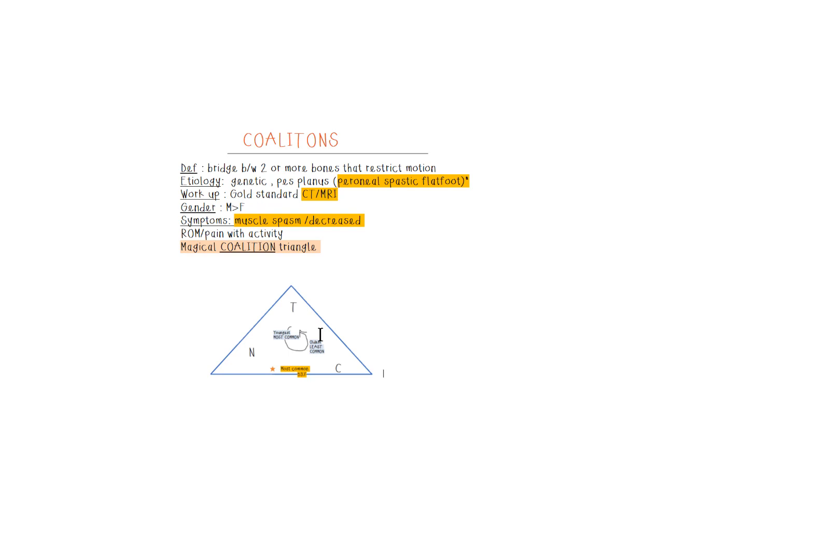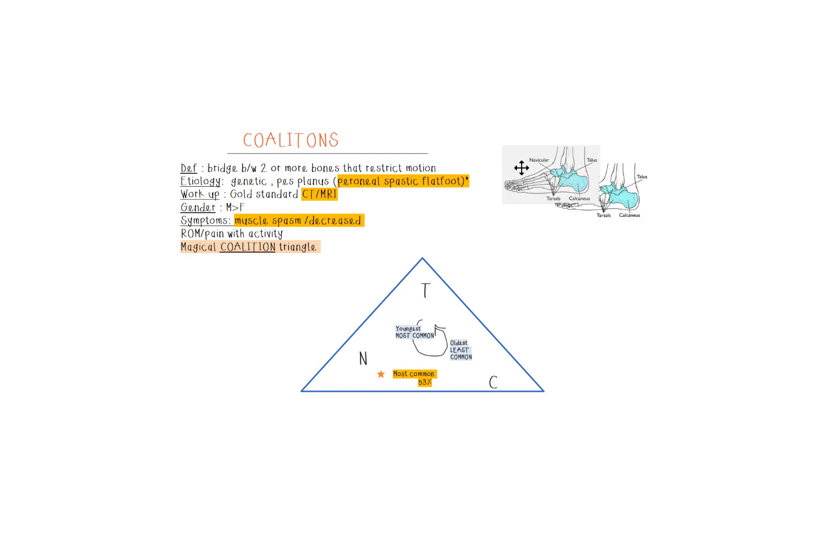There are three very common coalitions that they love to test on exams, and I put them in this little triangle. I call it the magical coalition triangle. We've got T for talus in the top corner, C for calcaneus on the right corner, and N for navicular on the left corner. The inner circle shows oldest to youngest and least common to most common. Recent publication shows navicular-calcaneus is the most common by 53%.